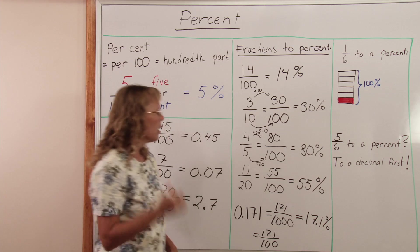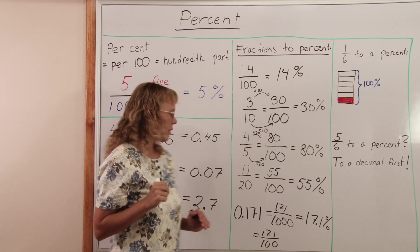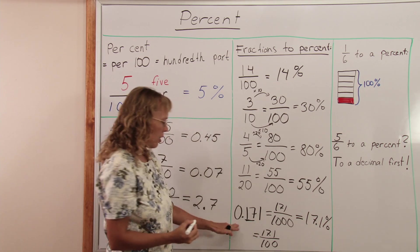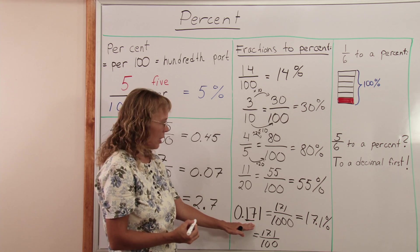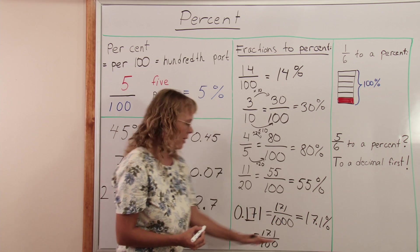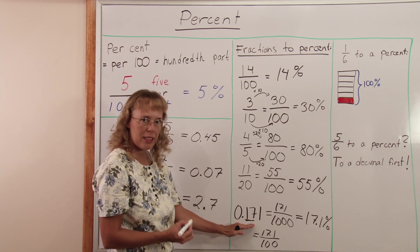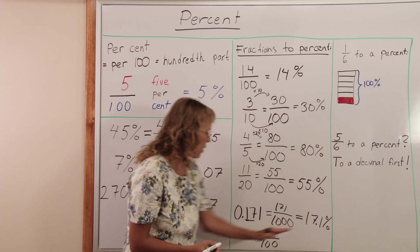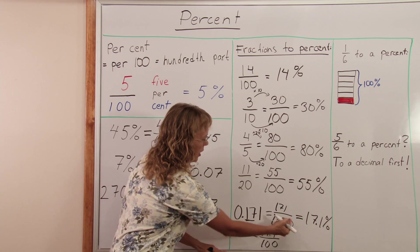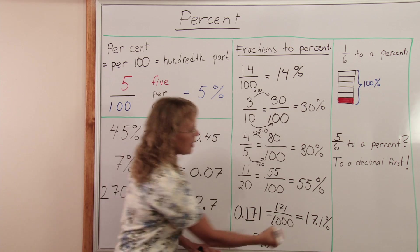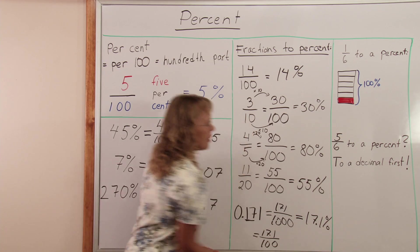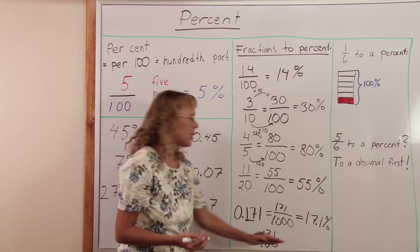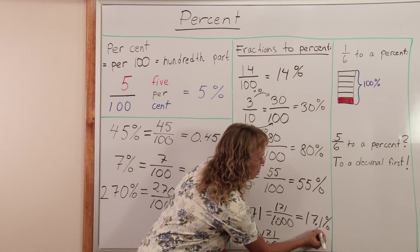But the way I usually do this is, I just remember that if it was 0.17, it would be 17 percent, right? 0.17 would be 17 hundredths, 17 percent. And so whatever comes after here, however many decimals, they just become like the point and then tenth of a percent, hundredth of a percent, they become after the decimal point here.